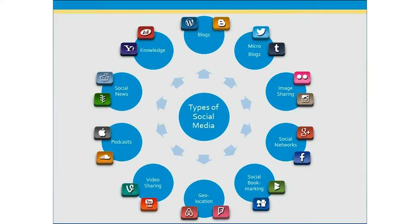Another type of social media platform would be social networks. This is where members can connect with other people and share personal information, their interests, photos, and status updates. Two common social network platforms would be Facebook and Google+. The next type of social media platform would be social bookmarking.